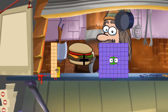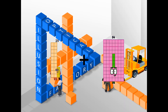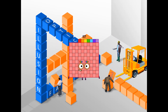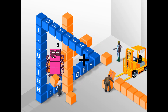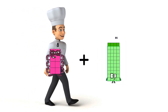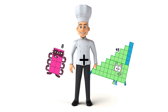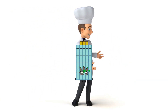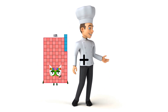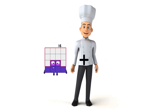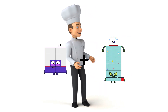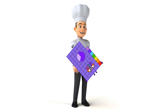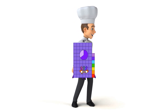23 plus 84 equals 107. 8 plus 45 equals 53. 15 plus 51 equals 57.